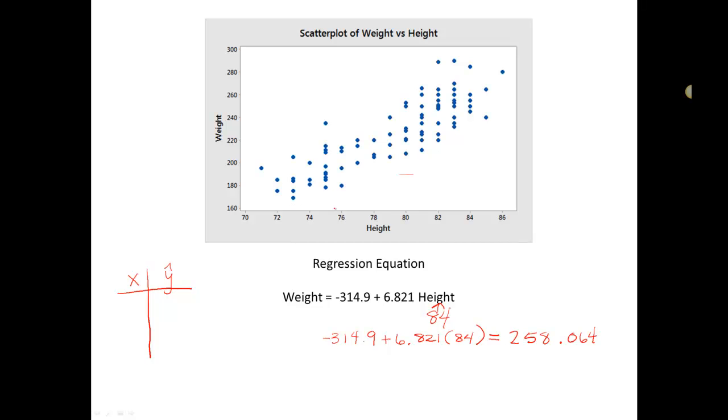And we can choose any two values of x. However, it's a good idea to choose one that's on the lower end and an x value that's on the higher end. So since I've already made a prediction for 84, I'm going to keep that as one of my values. So I'm going to put x of 84 in there, and that gave me a y hat of 258, essentially. And now I'm going to go ahead and choose a smaller value. Let's say 72.